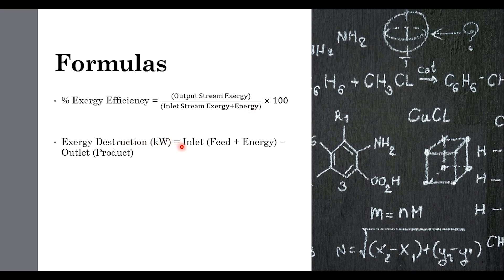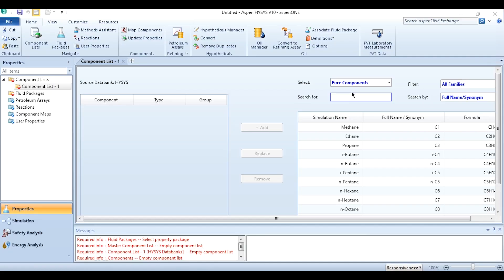Exergy destruction in kilowatts is calculated as inlet minus outlet, where inlet is feed plus energy and outlet is the product. With that understood, we will first calculate physical exergy from Aspen Hysys before doing the full calculations. Let's move to Aspen Hysys and solve the process.